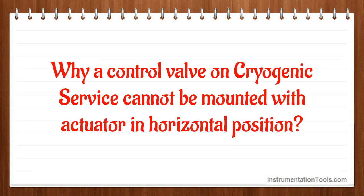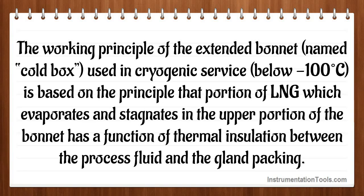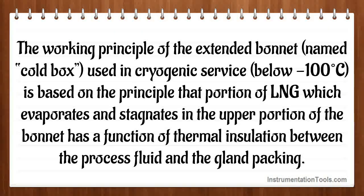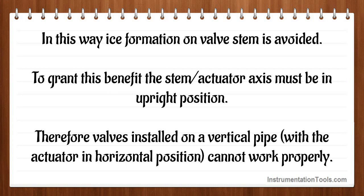Why can a control valve on cryogenic service not be mounted with the actuator in horizontal position? The working principle of the extended bonnet, named cold box, used in cryogenic service below minus 100 degrees centigrade, is based on the principle that a portion of LNG which evaporates and stagnates in the upper portion of the bonnet has a function of thermal insulation between the process fluid and the gland packing. In this way, ice formation on the valve stem is avoided. To grant this benefit, the stem-actuator axis must be in upright position. Therefore, valves installed on a vertical pipe with the actuator in horizontal position cannot work properly.